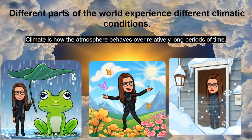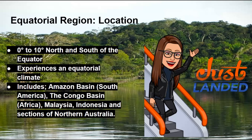Parts of the world experience different climatic conditions, and we know that climate is how the atmosphere behaves over a relatively long period of time. So some places experience a rainy climatic condition, some experience a sunny climatic condition, some experience a colder climatic condition — it all depends on where they're located in the world. Now, when we talk about the equatorial region, let's talk about its location.